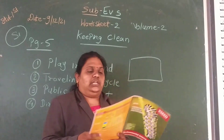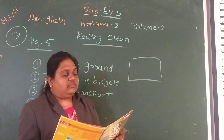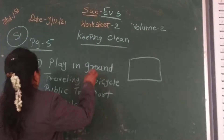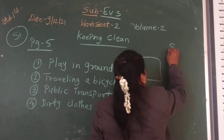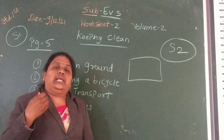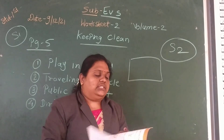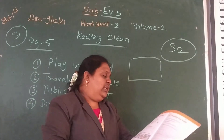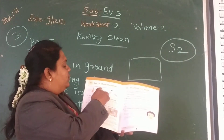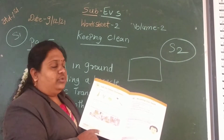Page number 5 is clear. After that, the next section is S2: 'Let us clean ourselves.' The question is: tick the things you use to clean your body.